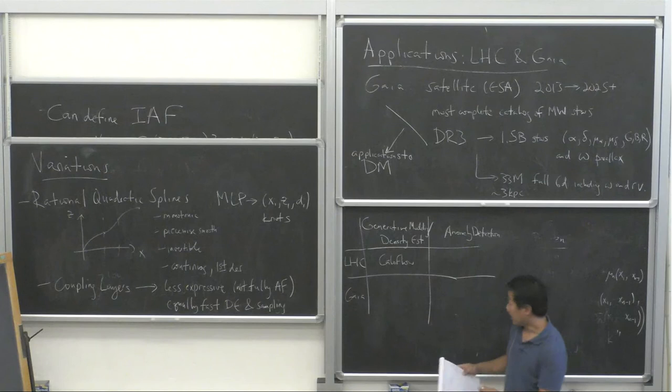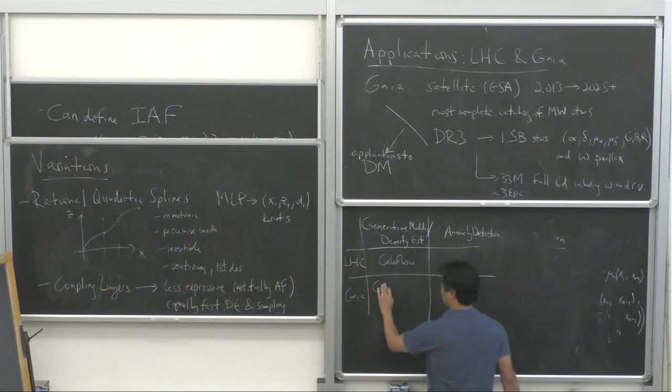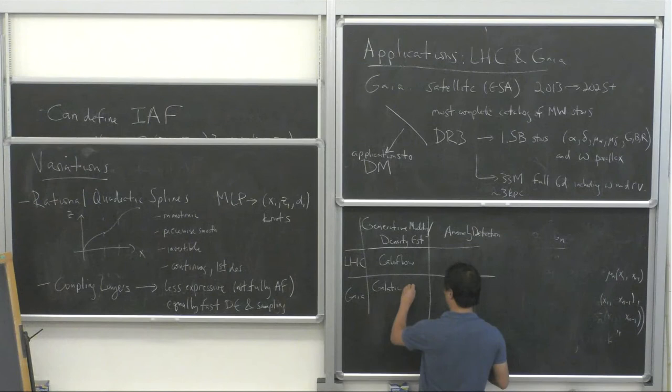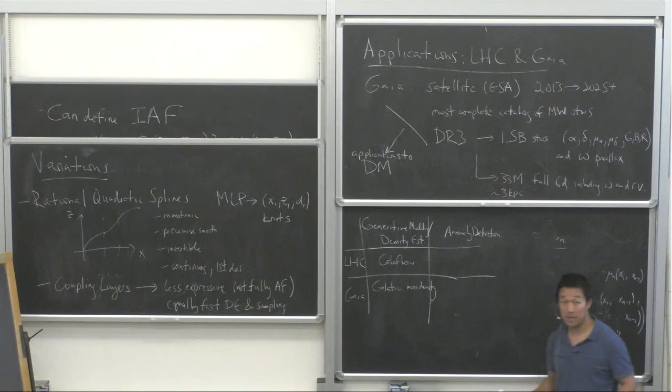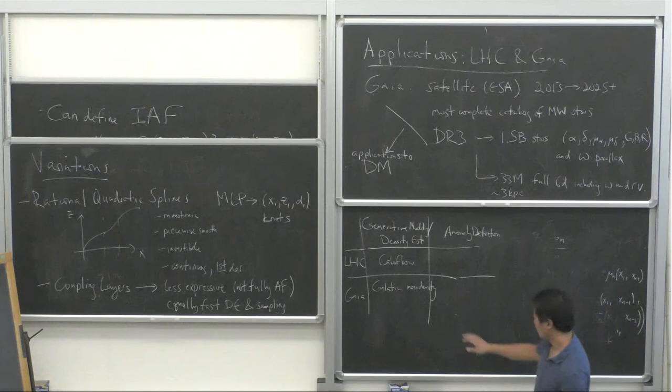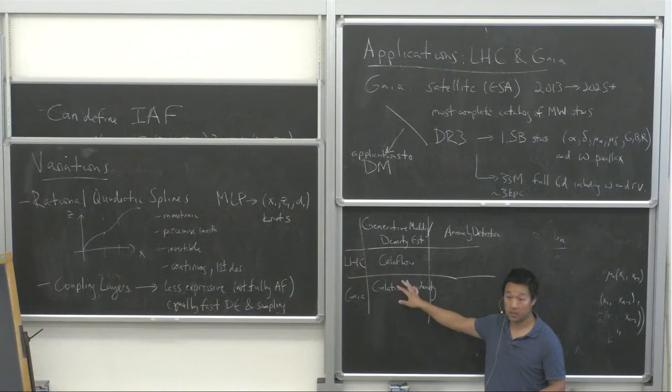For the Gaia data, we showed — at least in a proof of concept — that we could directly measure the phase-space density of the 33 million stars in our neighborhood. Then from the Boltzmann equation, we showed how you could get a direct measurement of the galactic mass density function rho of X. We've done this on simulated data where we know the answer, and now we're trying it on the real data.